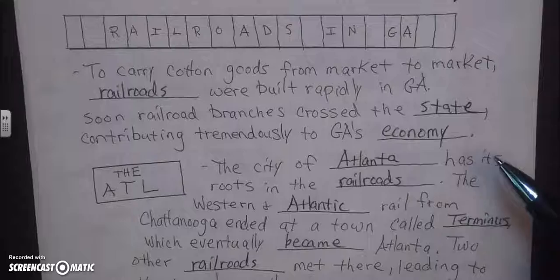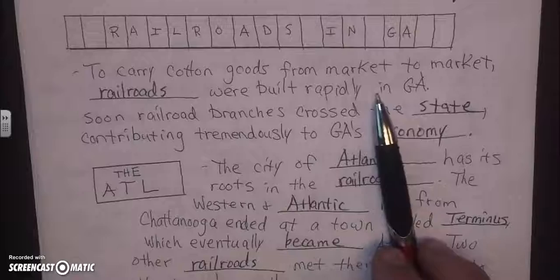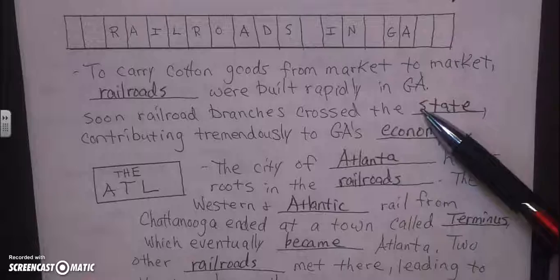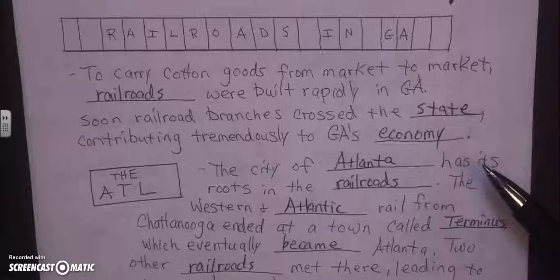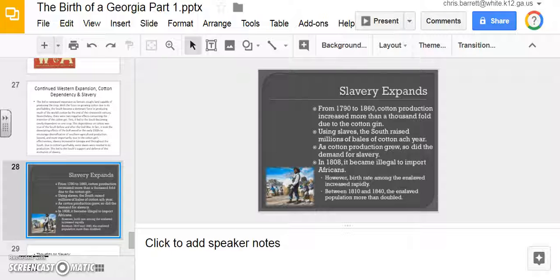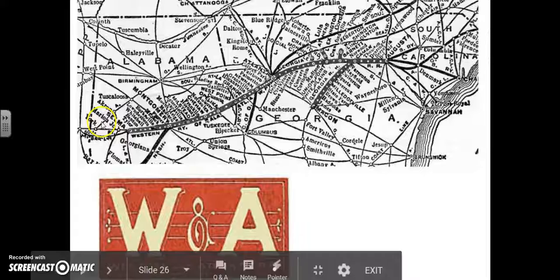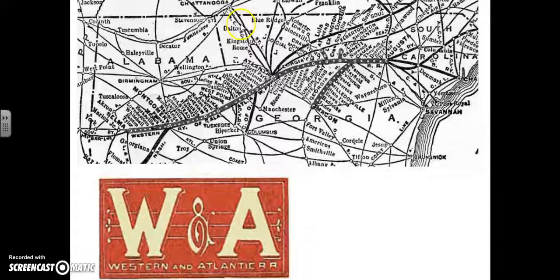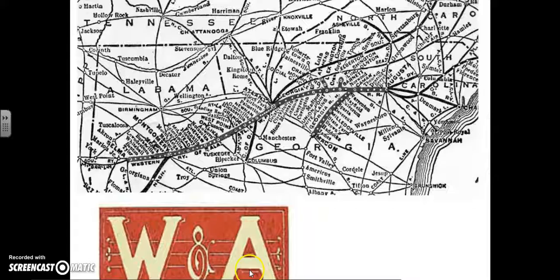One of the main ways they moved cotton from market to market was railroads. Railroads were built rapidly in Georgia, especially in the 1830s, and soon railroad branches crossed the state, contributing tremendously to Georgia's economy. The city of Atlanta has its roots in the railroads. The Western and Atlantic Railroad from Chattanooga ended at a town called Terminus, which eventually became Atlanta. Two other railroads met there, leading to the town's growth.